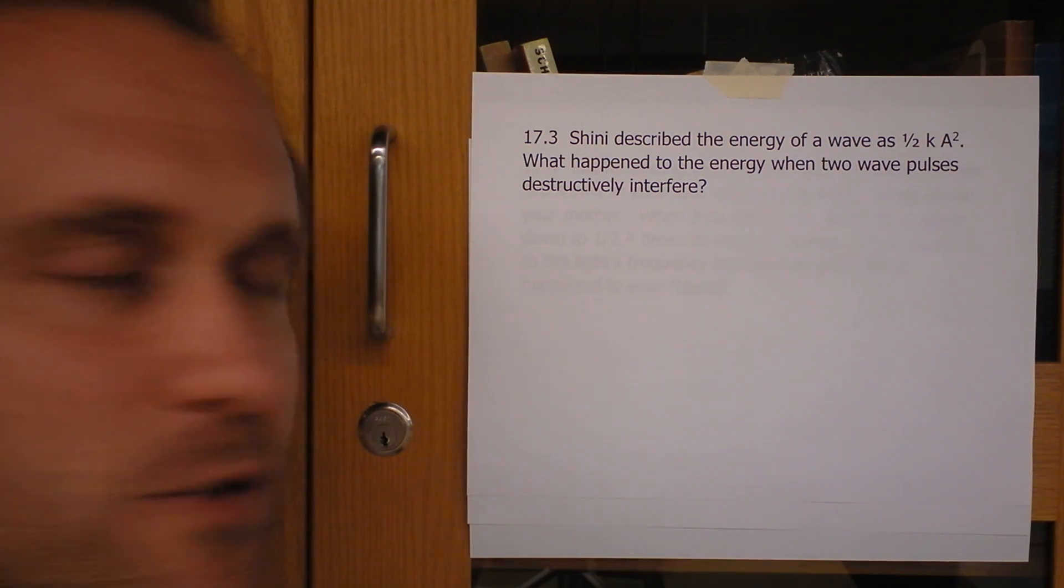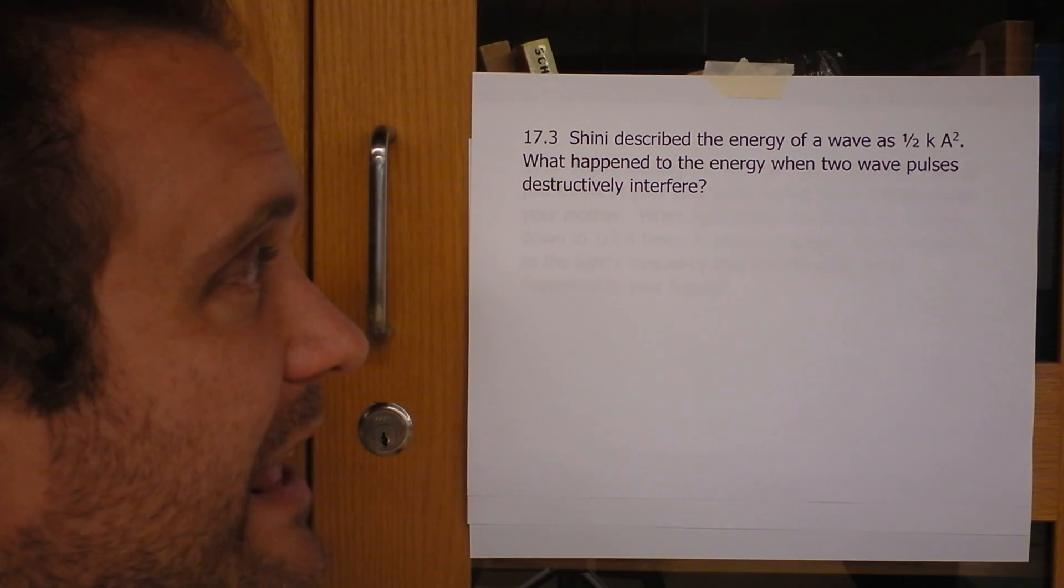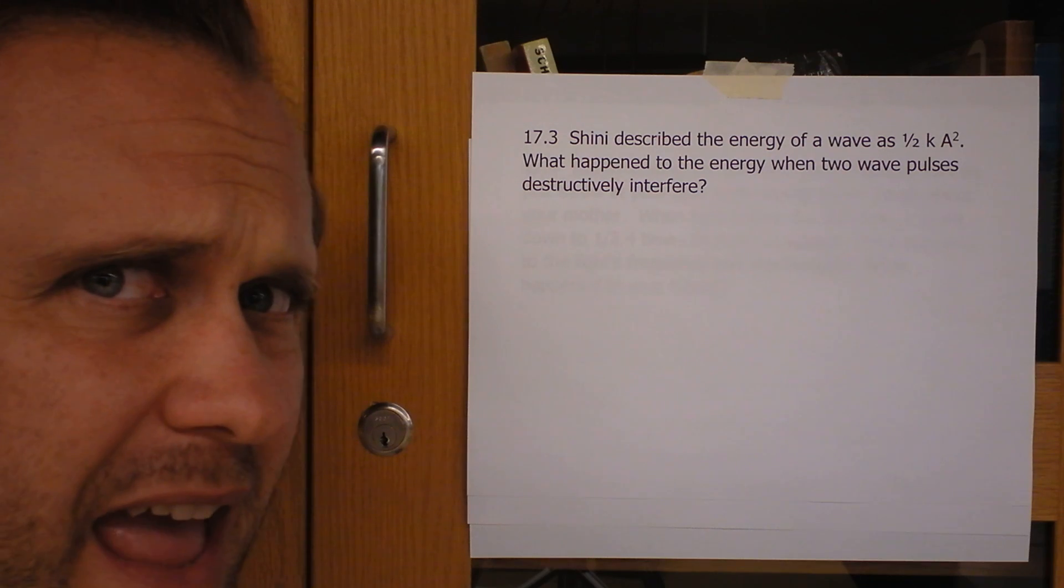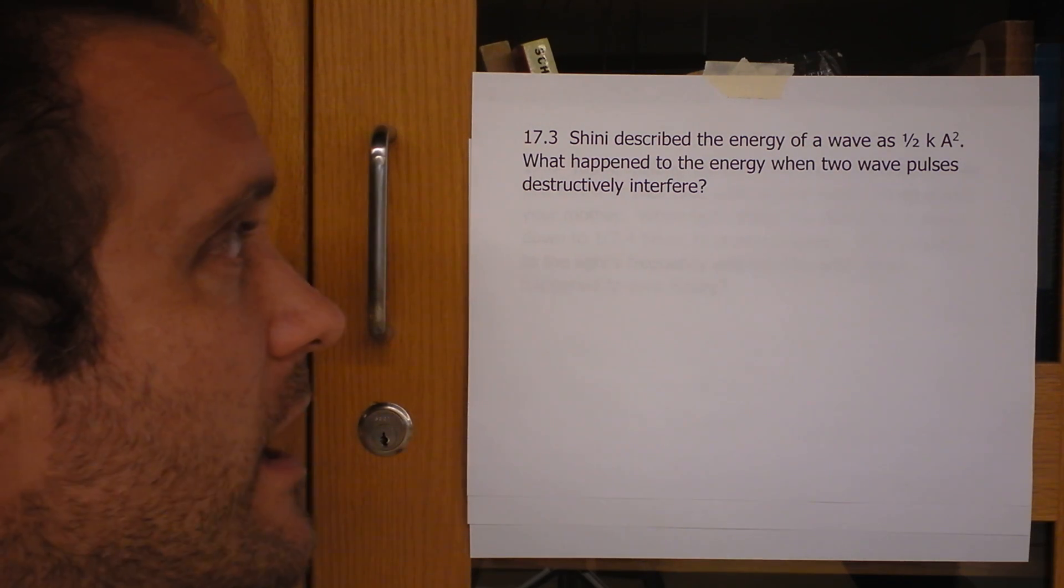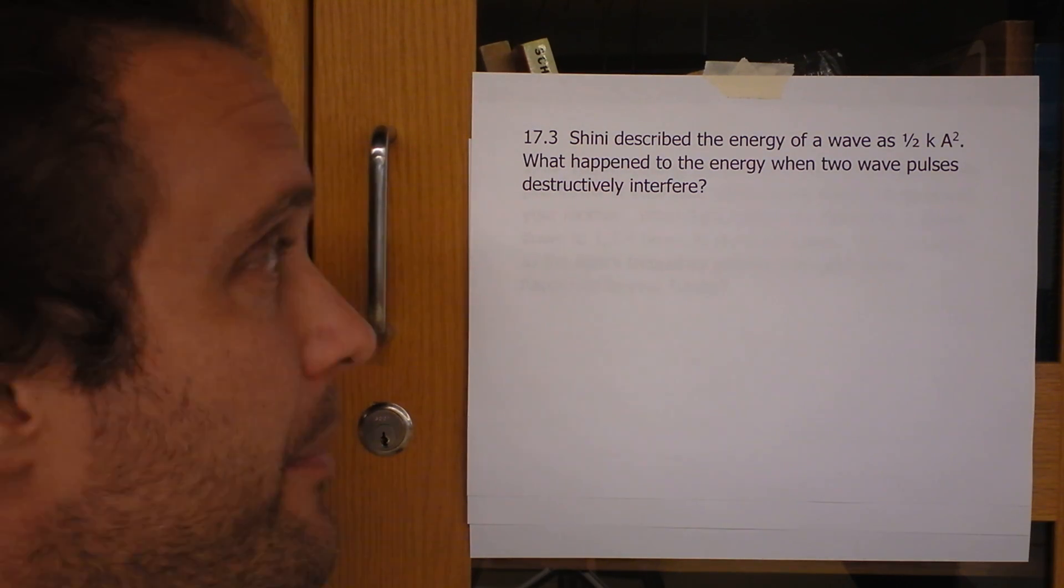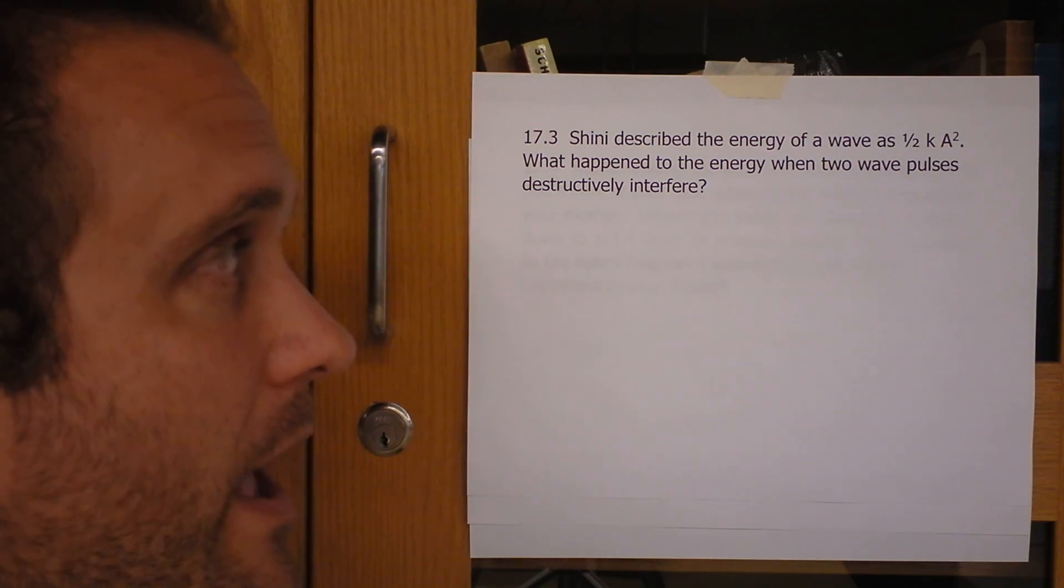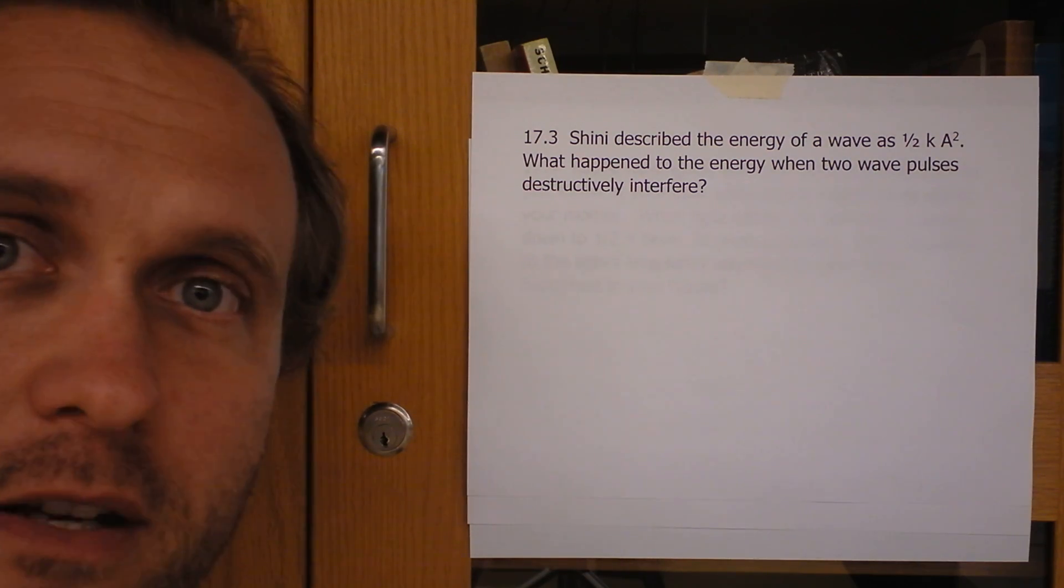Okay, so Shinian described the energy of a wave as one half K times the A squared. That's not an area, it's an amplitude, right? So I guess I want to know what happens to the energy of a wave when two wave pulses destructively interfere.